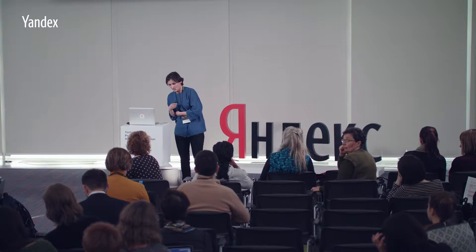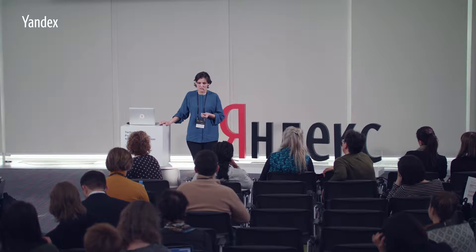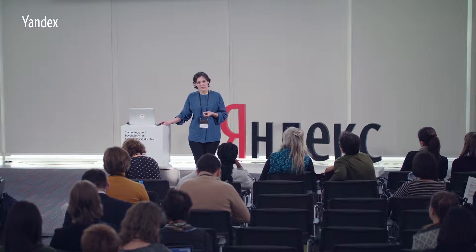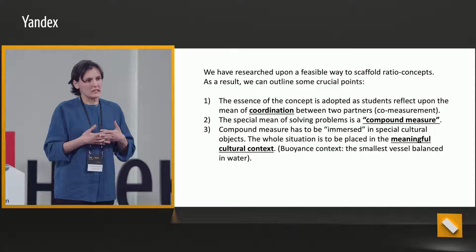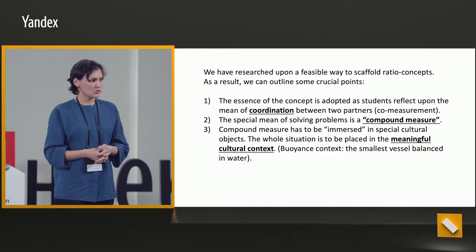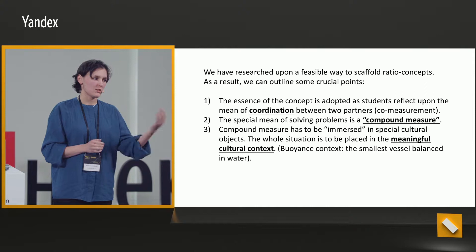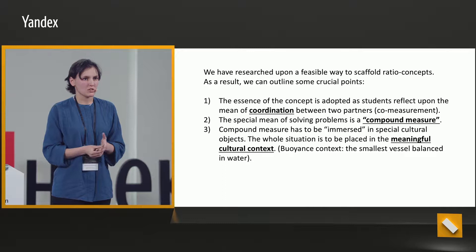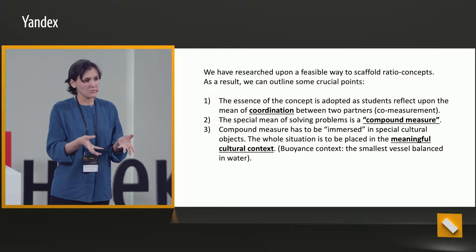It's more than one year that we've been working on this ratio concept. We have been thinking about how to form those notions among children. We believe that we use the core measurement action as the basis for understanding a ratio — an action done by two children, where each child is responsible for one value. As these values change, this action between children is the basis for understanding proportion. There is a compound measure which is measured by the two values.